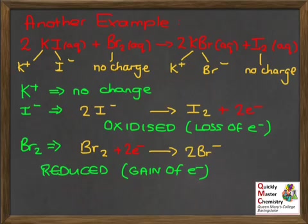Note the precise language: don't say iodine has been oxidized — say iodide ions in the potassium iodide have been oxidized. And say bromine for the Br₂. Use the correct chemical name for the reactant in each case when talking about what's oxidized and what's reduced.